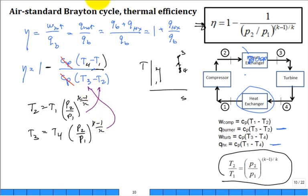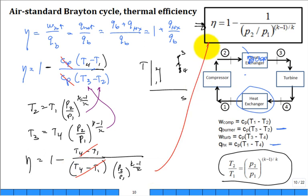So you'll end up with eta is equal to 1 minus T4 minus T1 divided by T4 times this P2 over P1 to the K minus 1 over K minus T1 to the same... These cancel and you're left with the result.